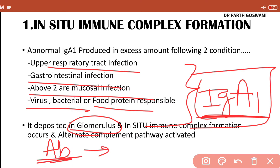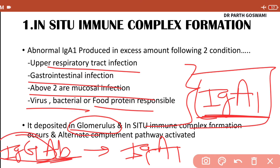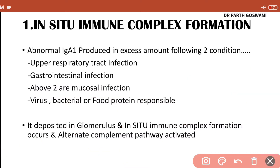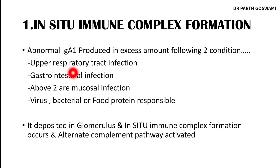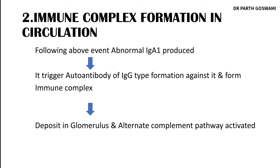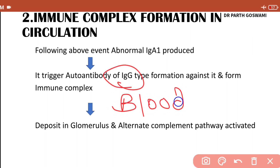In the glomerulus, an antibody — which could be IgG or IgM — forms against this abnormal IgA1, creating an immune complex within the glomerulus. Once the immune complex is deposited, it activates the complement system, leading to release of inflammatory mediators, leukocyte activation, and damage to the glomerulus, which initiates the nephrotic syndrome. In the second mechanism, following mucosal infection, the IgG antibody against IgA1 forms in the blood circulation rather than in the glomerulus.